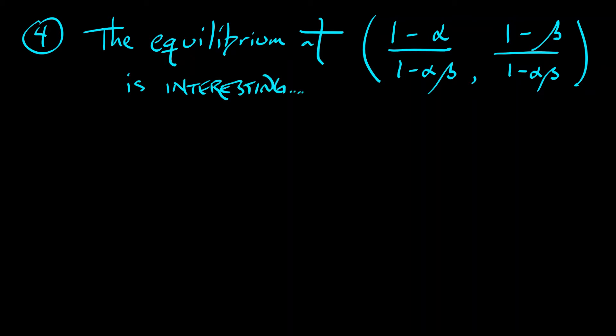Because it's not always physically realistic in the way that the others are. Remember, we need these population sizes to be non-negative. So this equilibrium requires either that alpha and beta are both less than 1, or alpha and beta are both greater than 1. If we have a mixture between the two, then this equilibrium is not physically realistic, because you've got some negative populations.